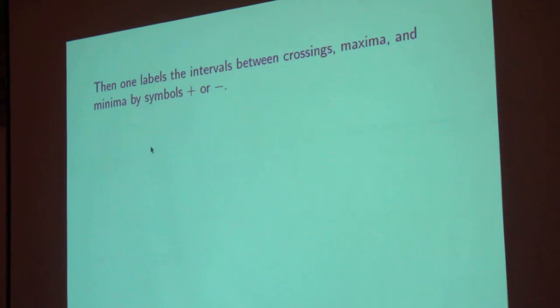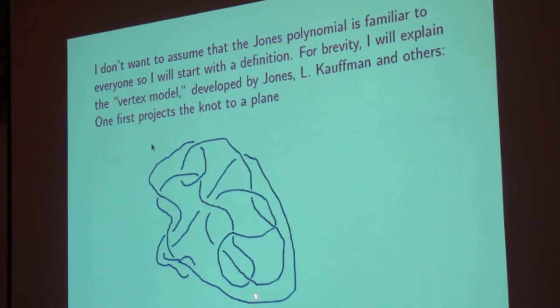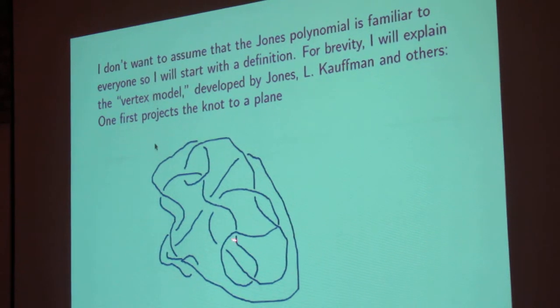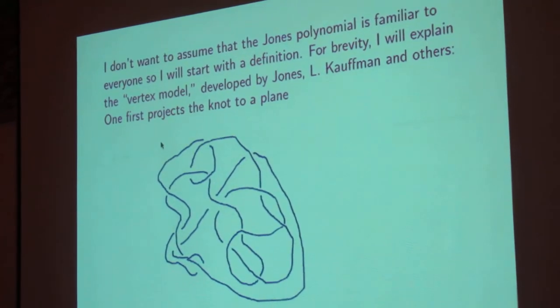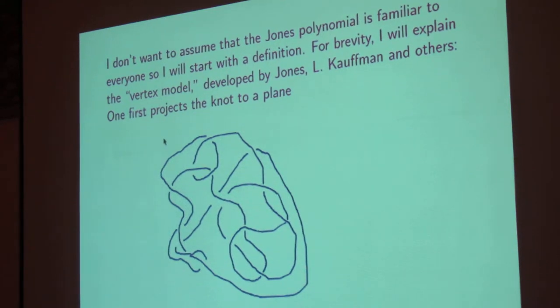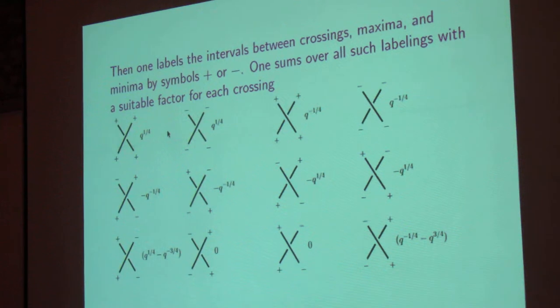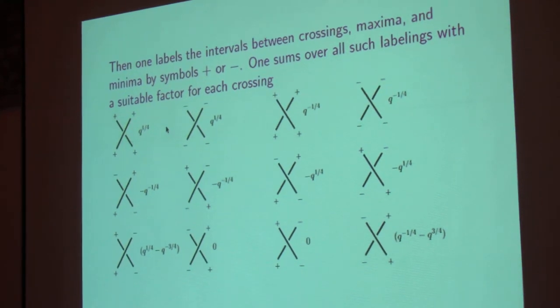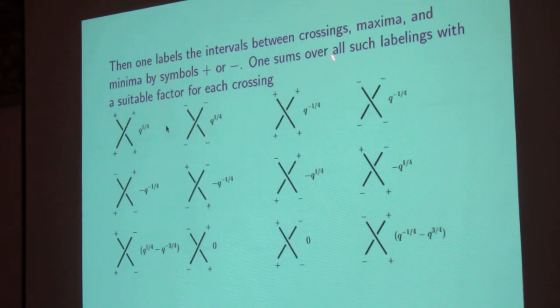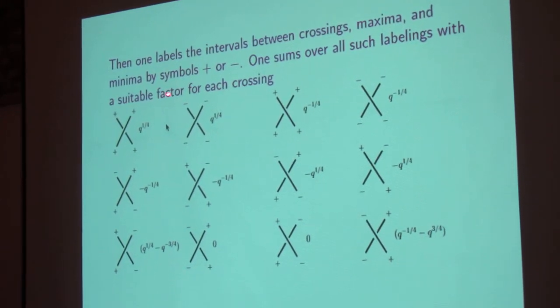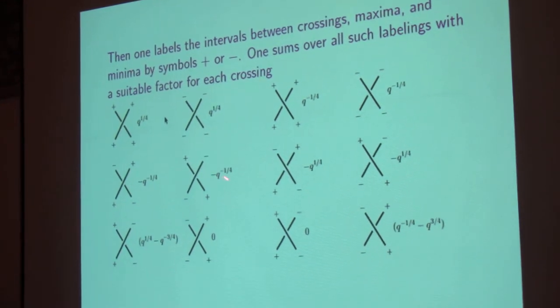And having made that projection, we're going to do a discrete version of statistical mechanics. So there are certain points here where two strands cross, like here, or their local maximum like this one or that one. So you remove all the crossing points and all the local maxima and minima, and you label what's left by symbols plus or minus. And then you're going to sum up each labeling with suitable factors for both crossings and also for maxima and minima, which we'll show on the next page.